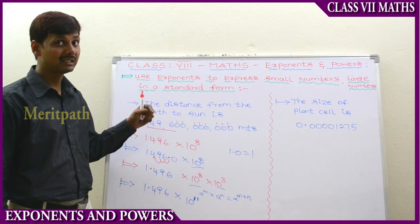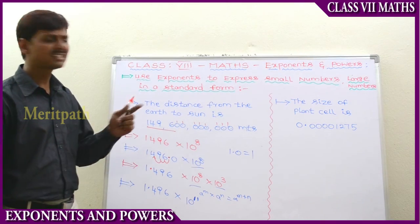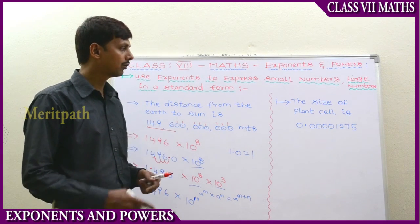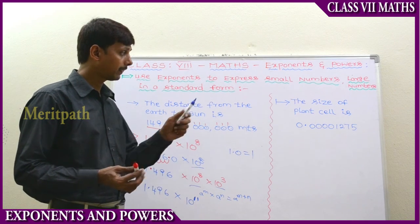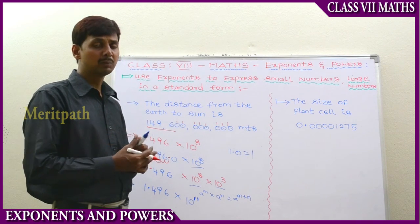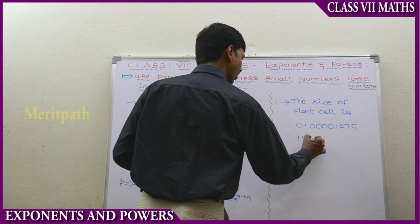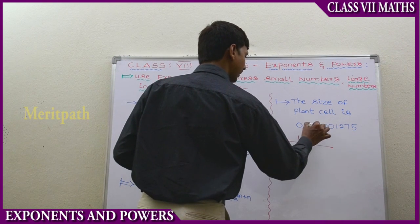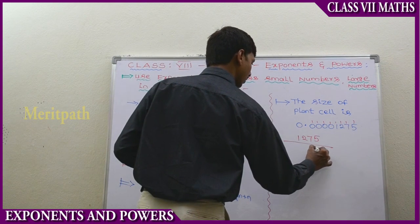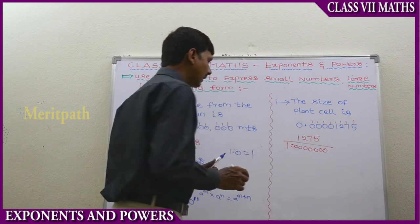We have represented the largest number in standard form using the laws of exponents. Now let's look at the next example — the smallest number. The size of a plant cell is 0.00001275 millimeters. We need to write this in standard form. If it is a decimal number, we change it to a fraction. So it becomes 1275 divided by — let's count the decimal places: 1, 2, 3, 4, 5, 6, 7, 8 — so 8 decimal places, meaning there are 8 zeros.